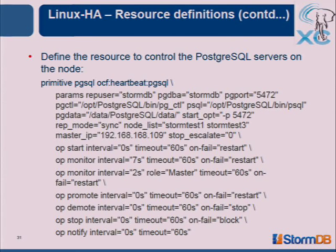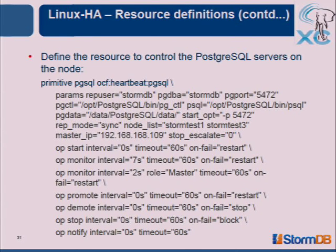All of this should happen automatically based on the intervals provided. There's a periodic interval to check the master and slave — you can decide how aggressive this is, maybe 30 or 45 seconds. If there's an issue when Pacemaker calls the monitor operation, it will fail and tell the configuration that something is wrong with stormtest1, and then the failure activity will start.